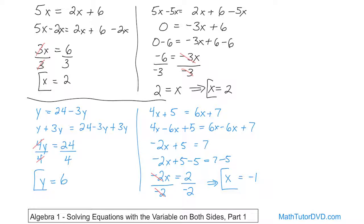You can check it: 4 times negative 1 is negative 4. Negative 4 plus 5 is positive 1, so the left side gives you 1. And on the right side, 6 times negative 1 is negative 6, plus 7 gives you 1 as well. So you have 1 on the left and 1 on the right — that means it's the correct solution.